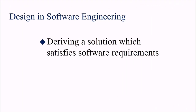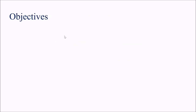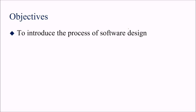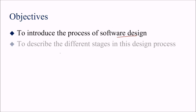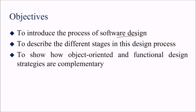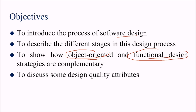We are discussing design in software engineering — trying to derive a solution which is going to satisfy the software requirements. Our objectives today are to introduce the process of software design, describe the various stages in the design process, show how object-oriented and functional design strategies are complementary to each other, and to discuss some design quality attributes.